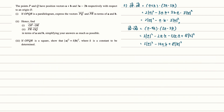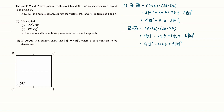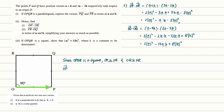In part 3, some students may not know how to start, but this question says OPQR is a square. This means there are 4 right angles at each corner, as shown in the diagram. If vector A is perpendicular to vector B, then A dot B equals 0. Since this is a square, we form an equation using part 2: vector OP dot OR equals 0, since they are perpendicular. This gives 2|A|² minus A·B minus 3|B|² equals 0, so A·B equals 2|A|² minus 3|B|². Call this equation 1.